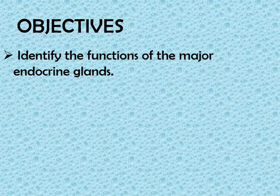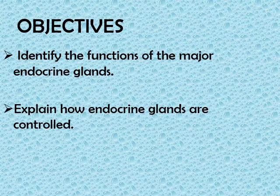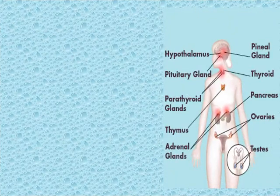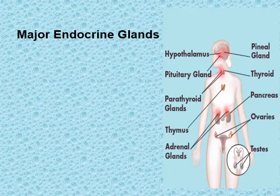Objectives of the lesson: at the end of this lesson you should be able to identify the functions of the major endocrine glands and explain how endocrine glands are controlled. Under this lesson we are going to discuss two major sections: the first is the human major endocrine glands, and the second is the control of the endocrine system.